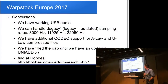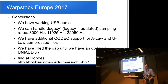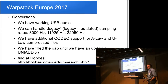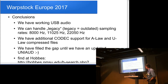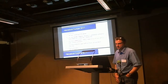The conclusion is we now have working USB audio. We can handle legacy sampling rates — the old ones: 8,000 Hz, 11,025, 22,050. We have additional codec support for A-law and mu-law compressed files, and I think we've filled the gap until we have an updated UNIAUD driver, because people are using USB audio as a replacement when their internal sound doesn't work.